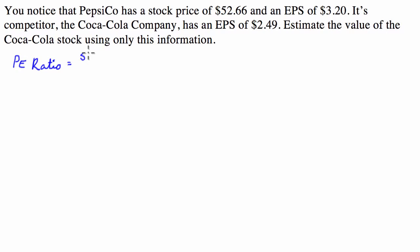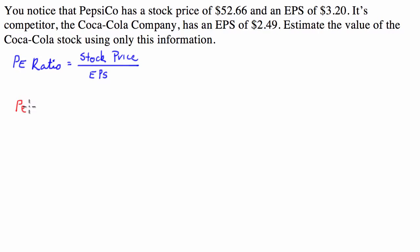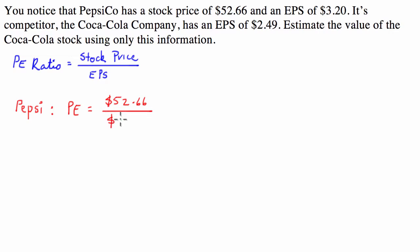To work that out, we'd take the stock price and divide that by the earnings per share. So in this case, for Pepsi, our P/E ratio is going to equal the stock price of $52.66 divided by its earnings per share of $3.20, and we get a P/E ratio of 16.456.